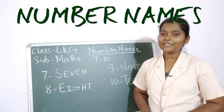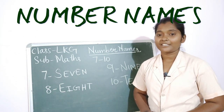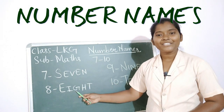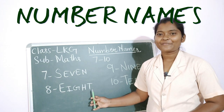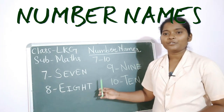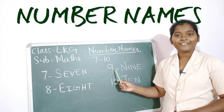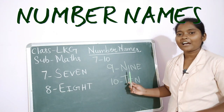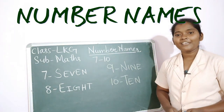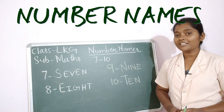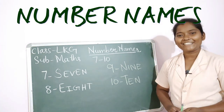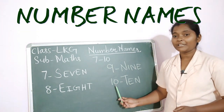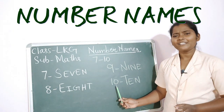G H T — eight. Yes, repeat once again: E I G H T — eight. Very good! Then nine — say children: nine, N I N E, nine. Repeat: N I N E — nine. And number name of ten, it's very easy.